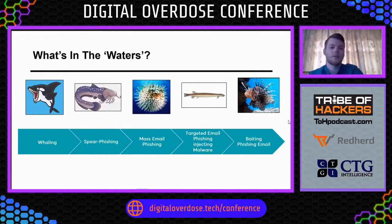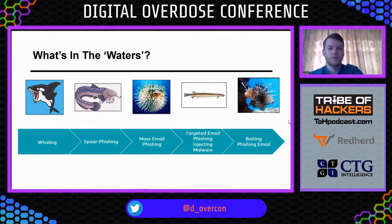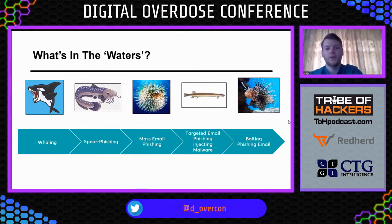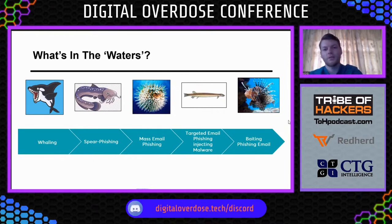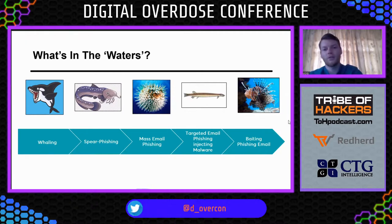So, what's in the waters? The first category is the whaling attack — this is targeting the C-level of an organization or company. The second category is the spear phishing attack, targeting a specific company, a specific brand, or a specific person from a company department. The third category is mass email phishing, targeting diverse persons. Bad actors may have access to your data through leaked databases such as the Facebook data leak, and with your email they can conduct a phishing or smishing attack.